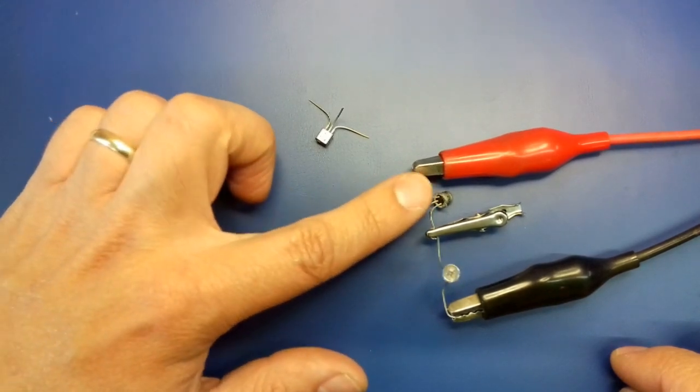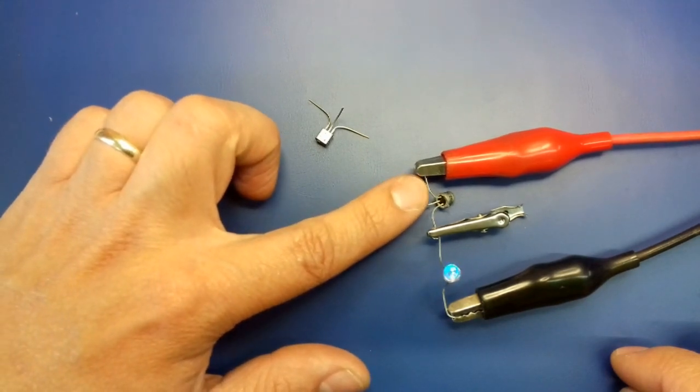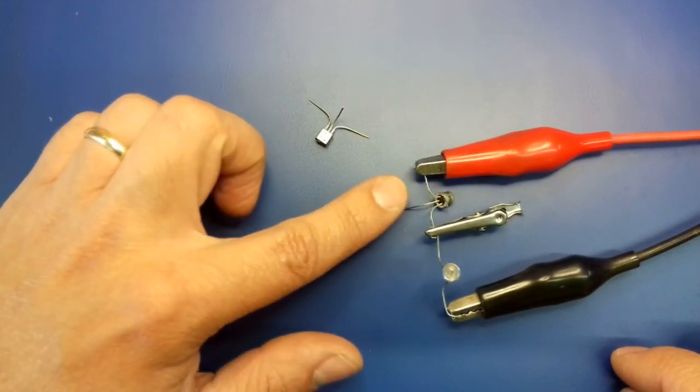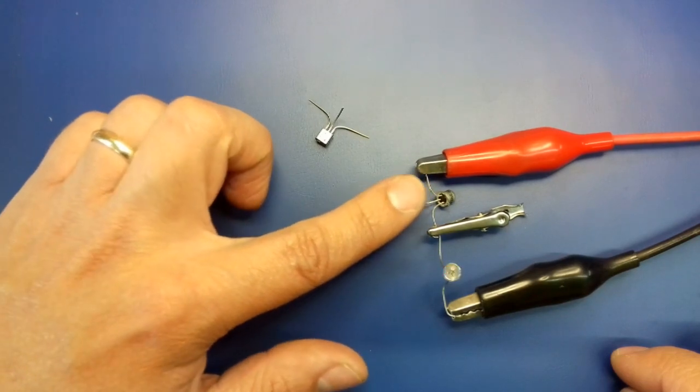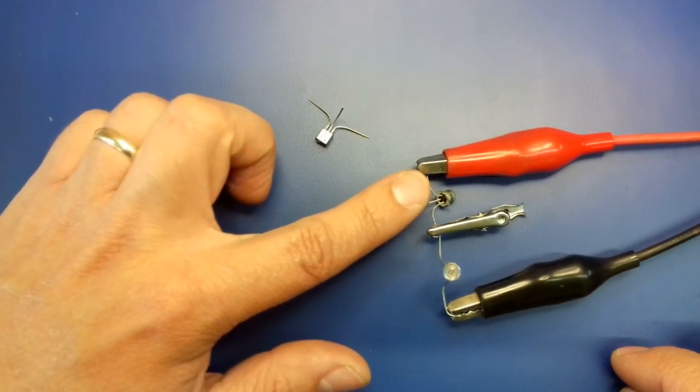Then open the junction of the transistor by touching with your finger between the collector and the base like this. It helps if your fingers are not very dry.